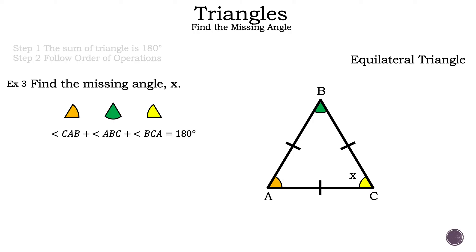We know that the sum of the triangle is 180 degrees. So we can write down the orange angle, or angle CAB, plus the green angle, or angle ABC, plus the yellow angle, or angle BCA, is equal to 180 degrees. Another reason why this is the case is if we put all the angles together, it forms a half circle, which is 180 degrees. And since we know the total is 180 degrees and all the angles are the same, and we have three angles, we can divide 180 by 3 to get 60 degrees for each angle.